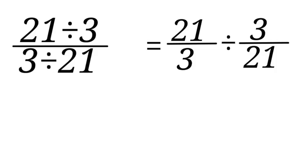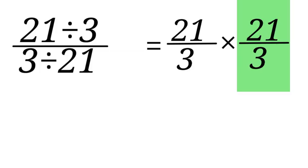Now we will change the division sign to multiplication and we will turn the fraction, this particular fraction upside down. So let's change the division to multiplication. When we have 21 all over 3 times 21 all over 3.